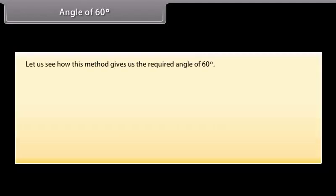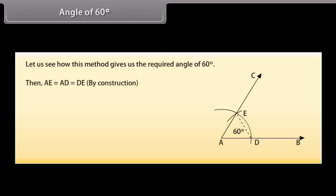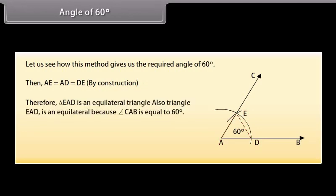Now, let us see how this method gives us the required angle of 60 degrees. Join DE. Then, by construction, AE equals AD equals DE. Therefore, triangle EAD is an equilateral triangle. Also, triangle EAD is equilateral because angle CAB equals 60 degrees.